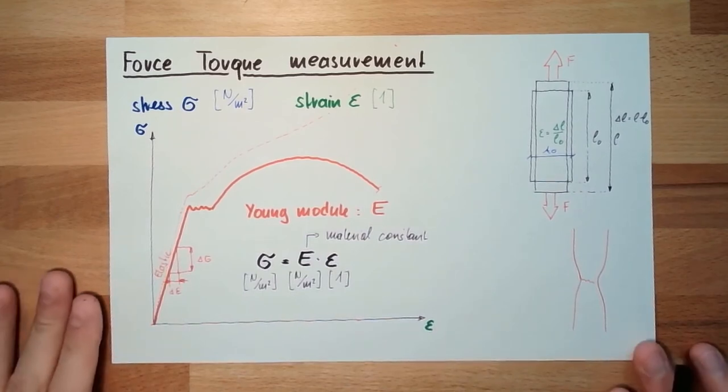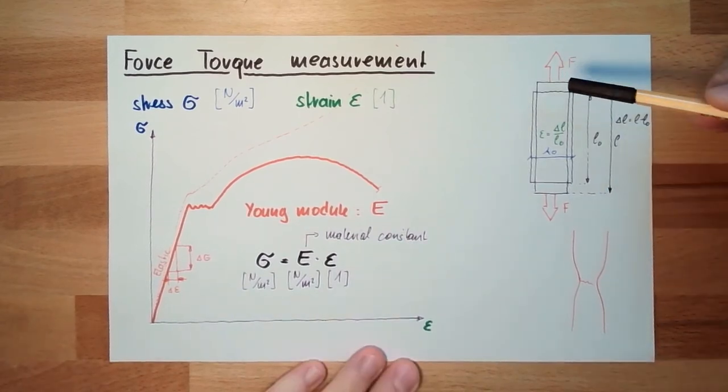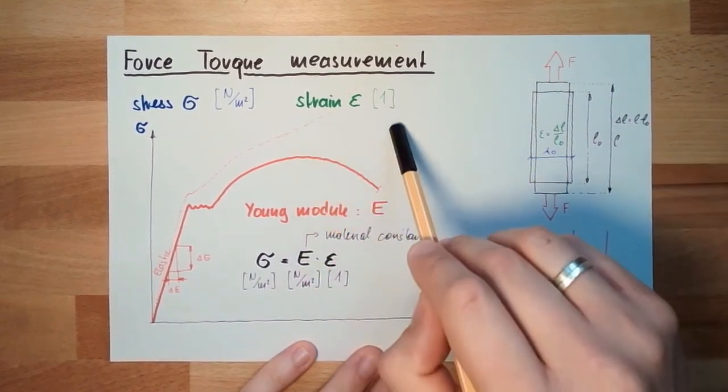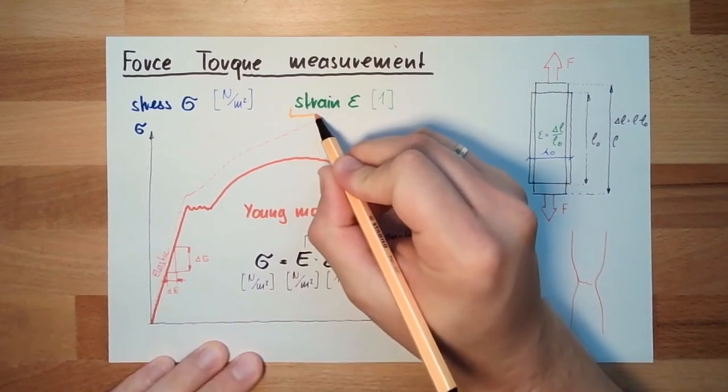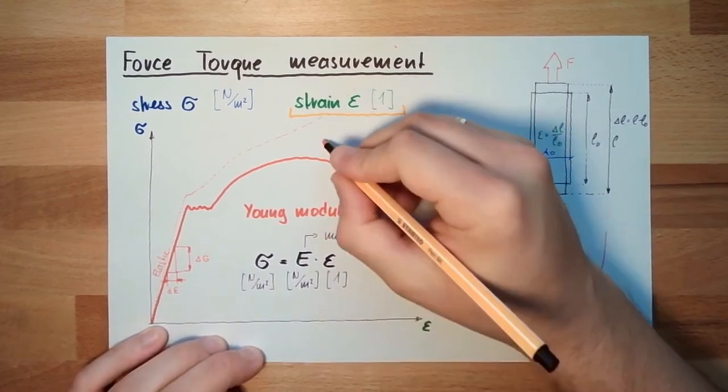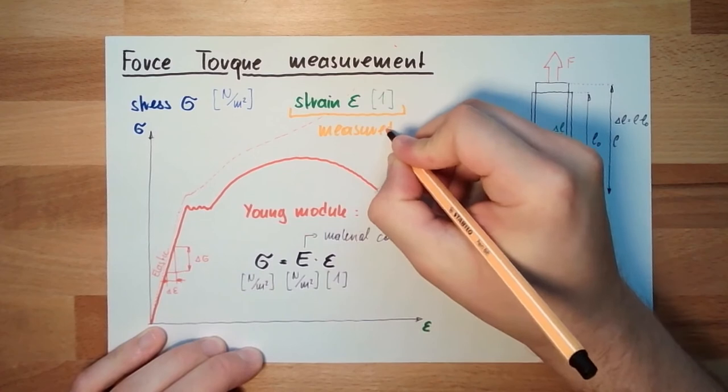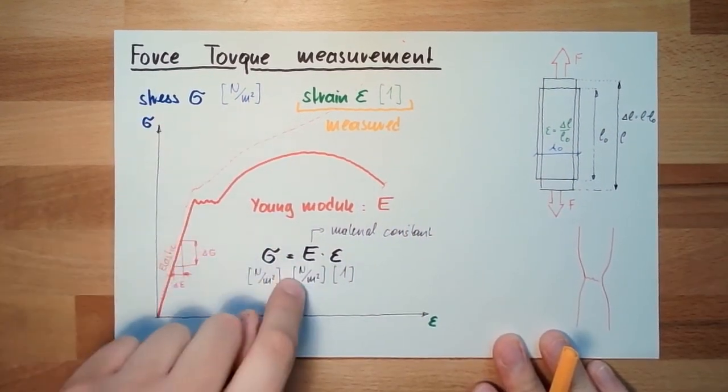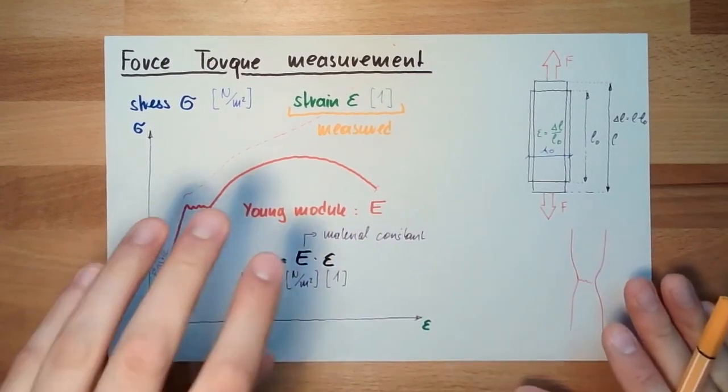Why I'm telling you this? Because if we want to measure the force, we cannot measure the force directly. We can only measure the strain. This is the thing I can measure. The strain is measured. This is what is measured. And from the strain, I get back to the stress. And from the stress, I get back to the force. This is how this is working.